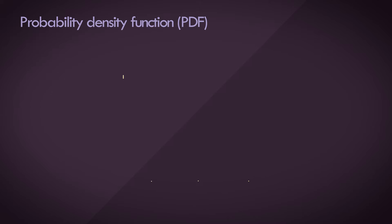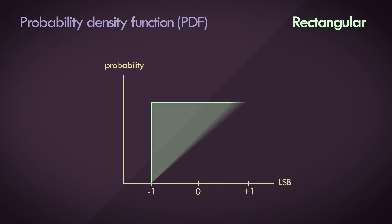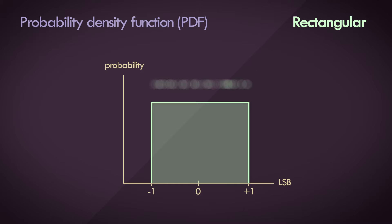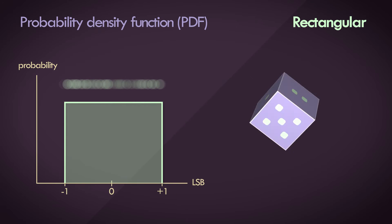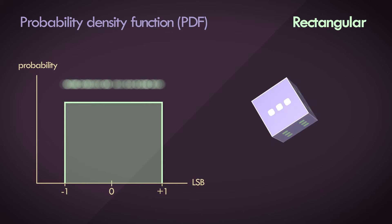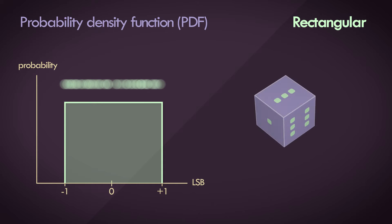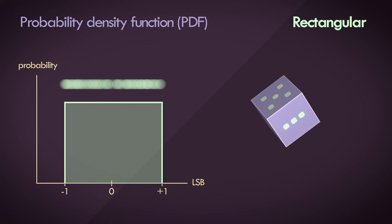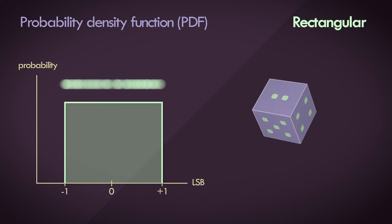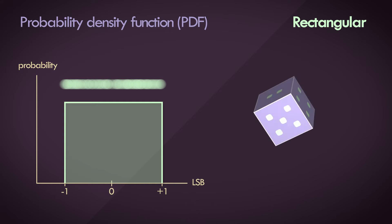The simplest one to explain is the rectangular probability density function. This is essentially like rolling a die — all die faces are equally probable and there's no bias. So a dither signal with rectangular PDF produces a noise signal where the values are equally probable throughout the entire interval range.